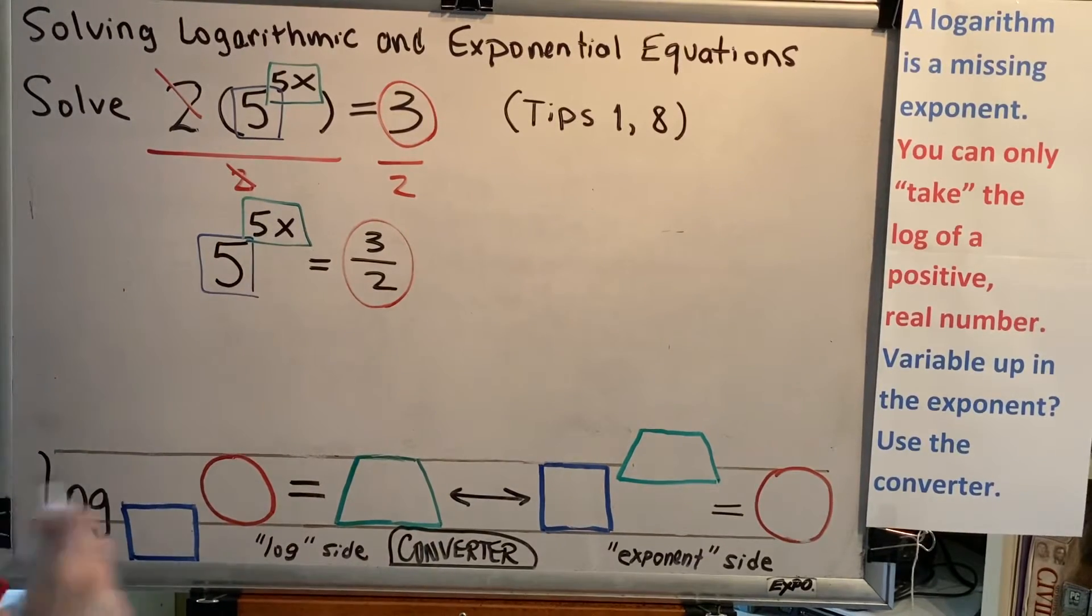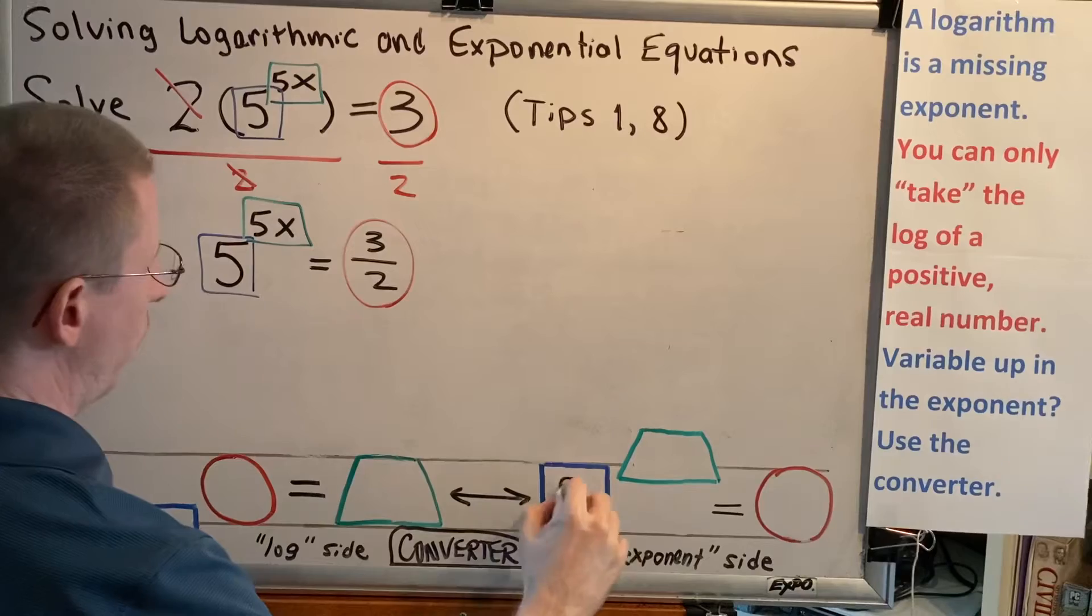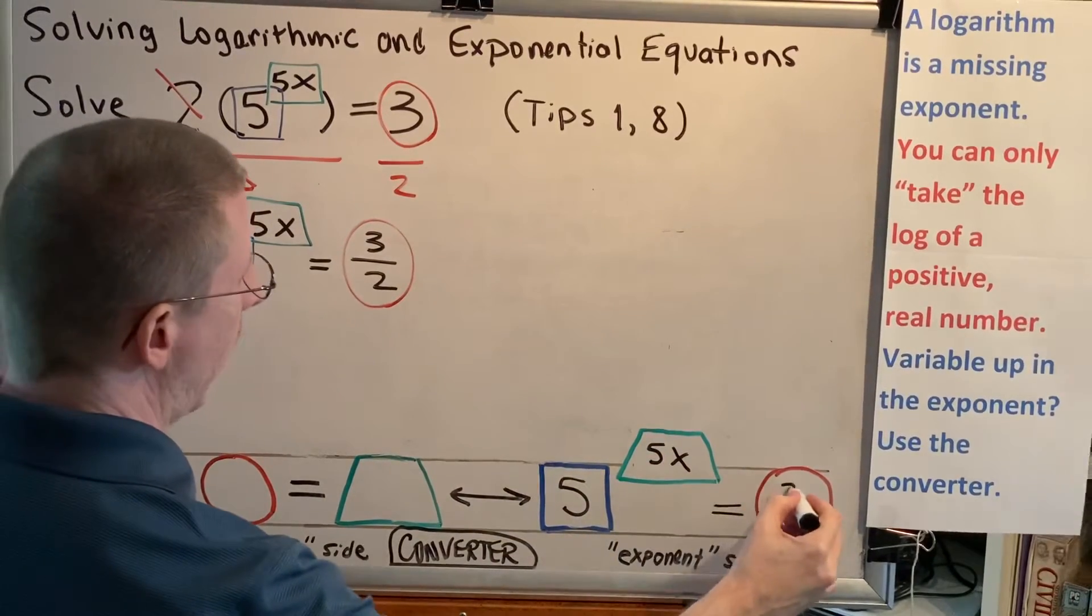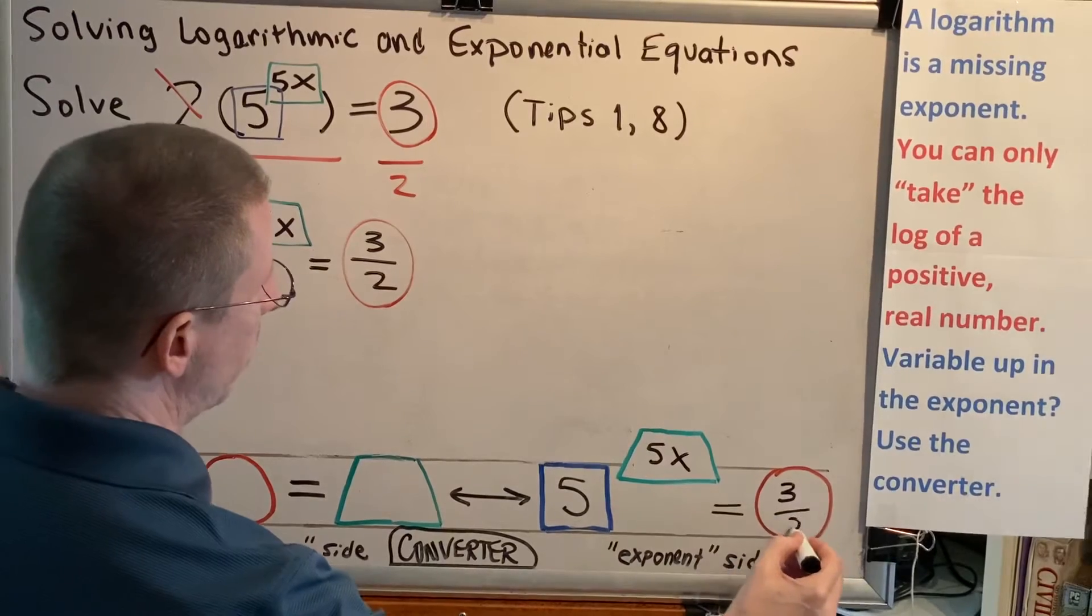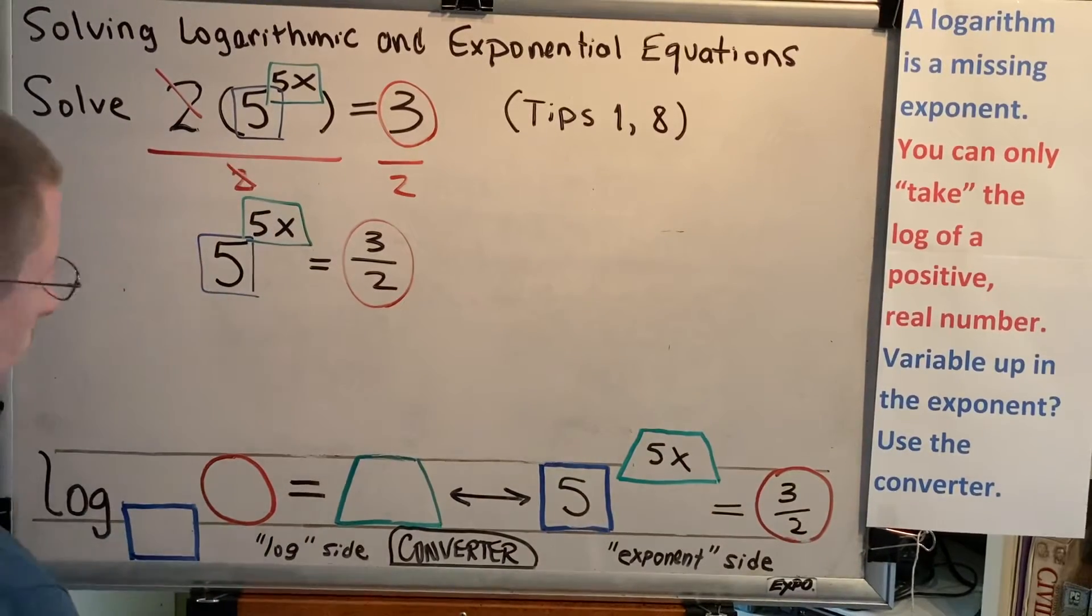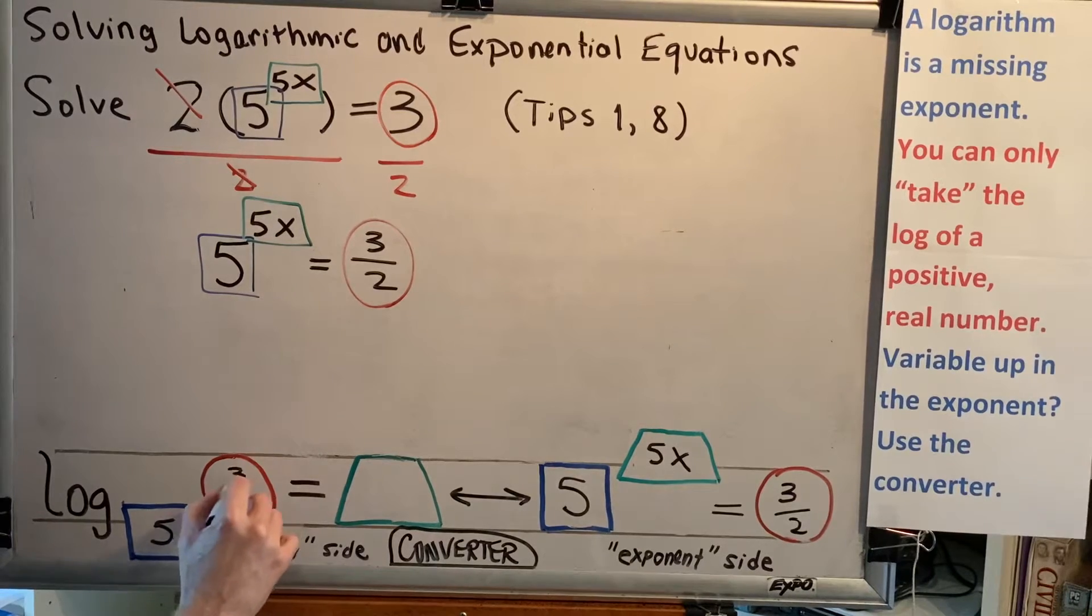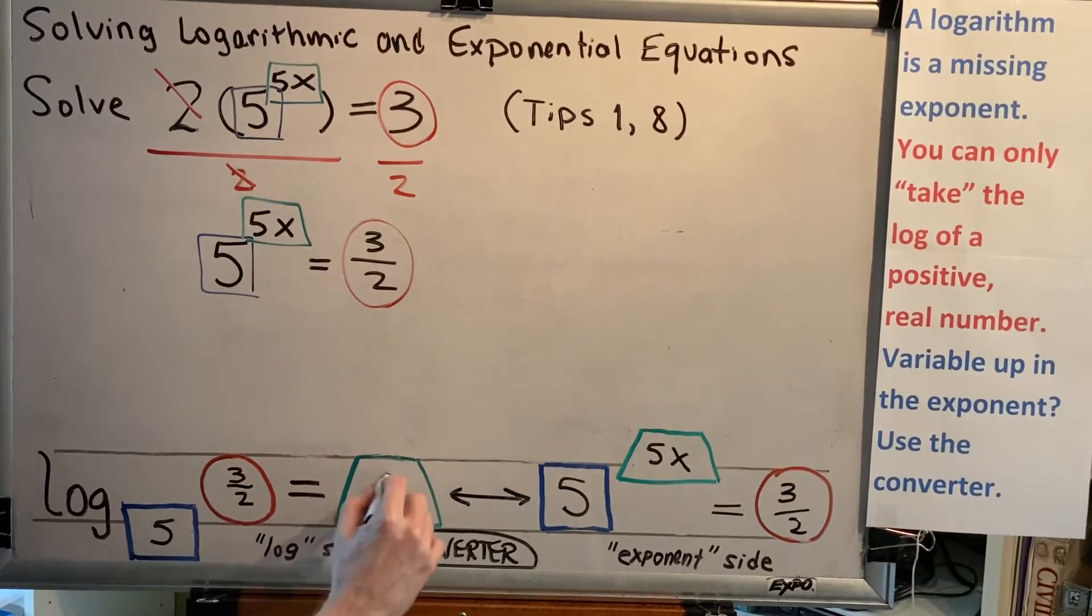So we can use our converter starting on the exponent side. 5 raised to the power 5x equals 3 halves. Now, match up the colors and shapes. So on the left, we'll have log base 5 of 3 halves equals 5x.